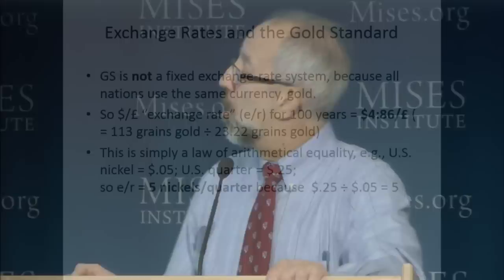So there weren't three distinct monies in the U.S., France, and Great Britain during that time. There was only one money — it was gold. Dollars, pounds, francs were just names for different weights of gold, just like nickels, quarters, dimes are names for different fractions of a dollar.